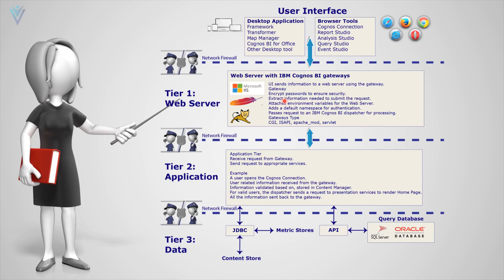Our end users use desktop applications or browser-based tools for accessing IBM Cognos services. In desktop applications we have Framework Manager, Transformer, Map Manager, Cognos BI for Office, or other tools. In browser tools we have Cognos Connection, Report Studio, Analysis Studio, Query Studio, or Event Studio.